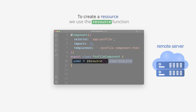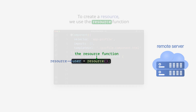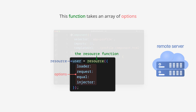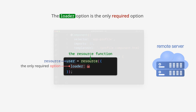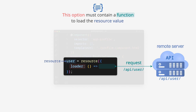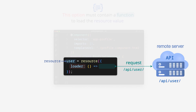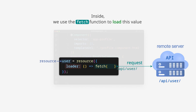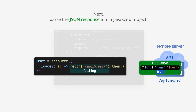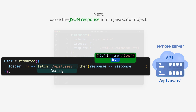To create a resource, we use the resource function. This function takes an array of options. The loader option is the only required option — it must contain a function to load the resource value. Inside, we use the fetch function to load this value, then parse the JSON response into a JavaScript object.